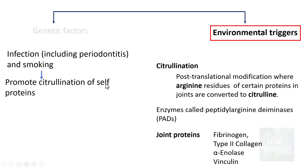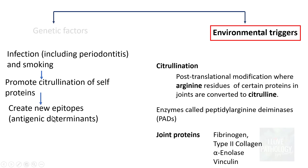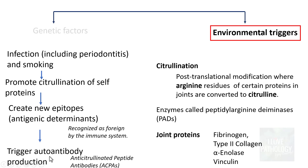Citrullination results in the creation or exposure of new epitopes — antigenic determinants — which are recognized as foreign by the immune system. This triggers autoantibody production; these autoantibodies are anti-citrullinated peptide antibodies (ACPAs), which are the most specific antibodies for rheumatoid arthritis. Remember the key word: citrullination.